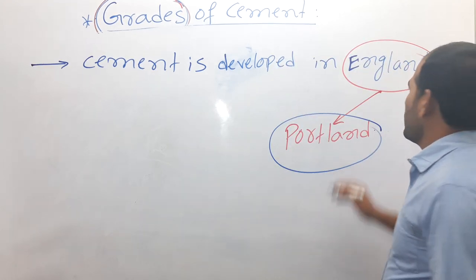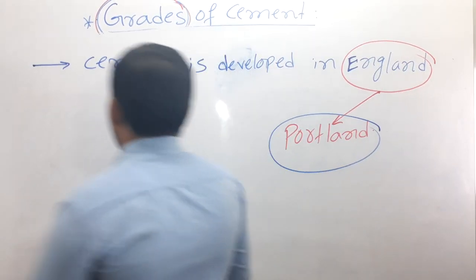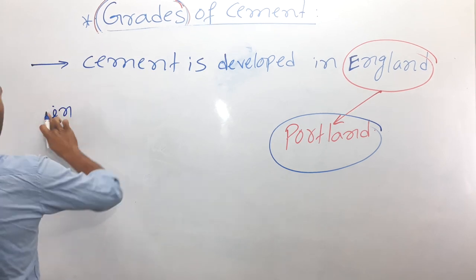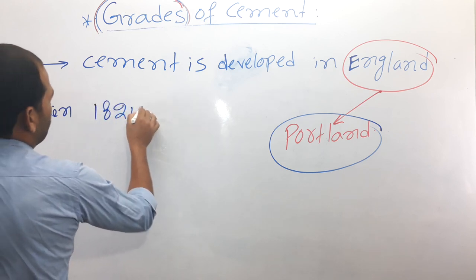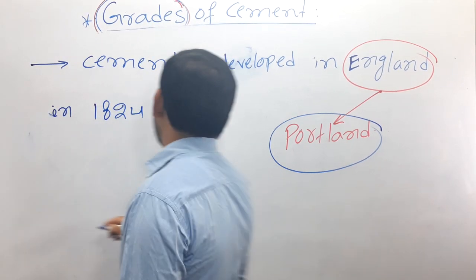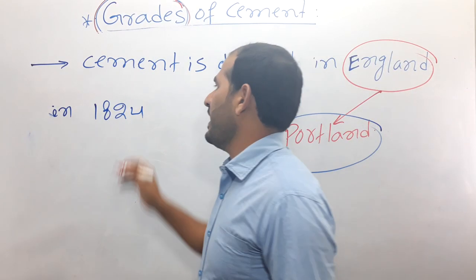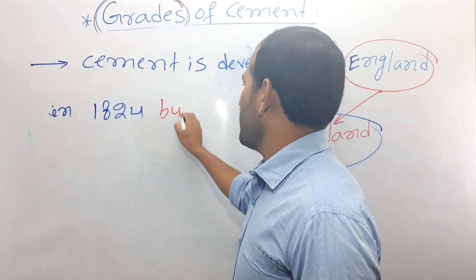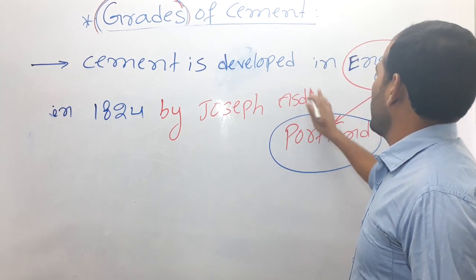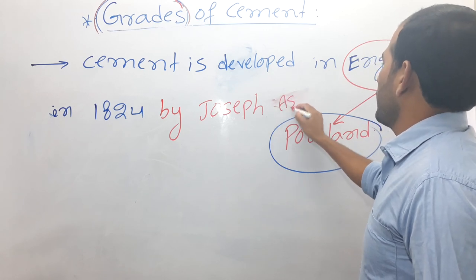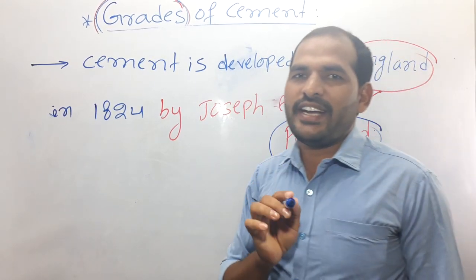The manufacturing process of cement was developed in England, in a place called Portland, in the year 1824 by Joseph Aspdin.